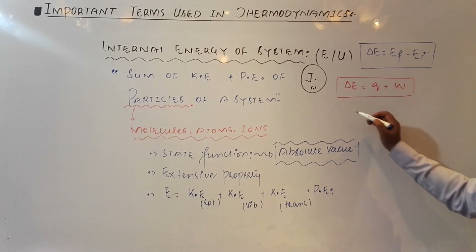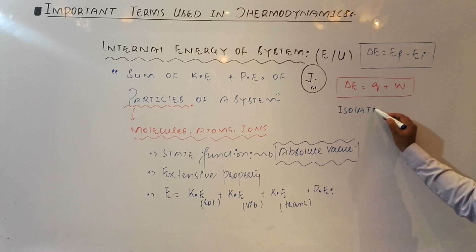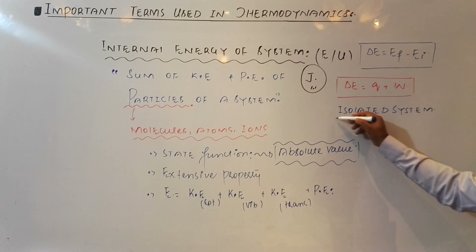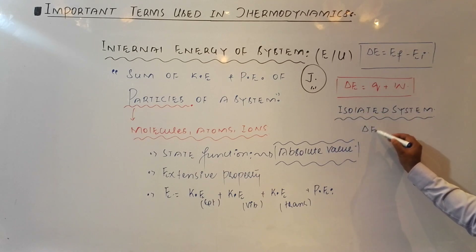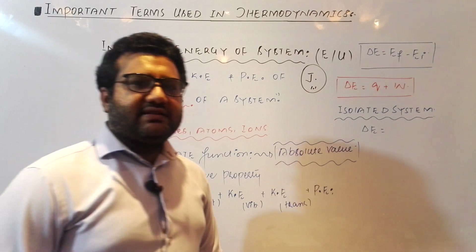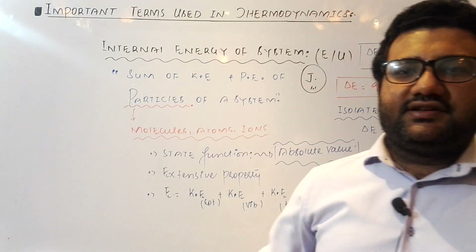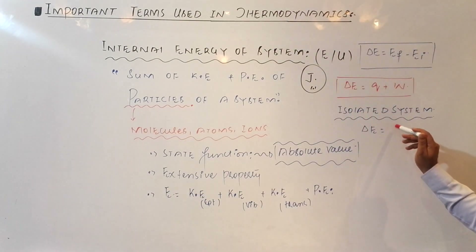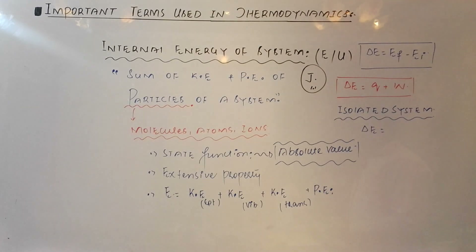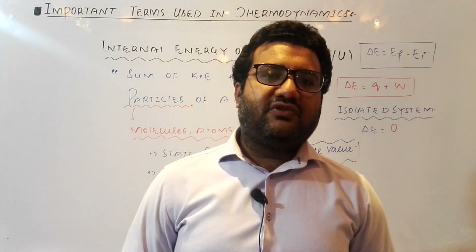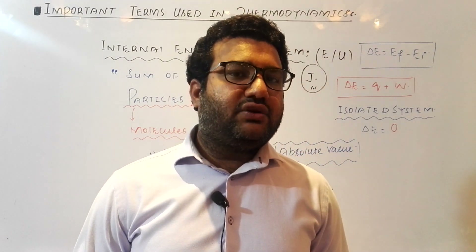Consider this question: if we have an isolated system, what will be the change in internal energy? An isolated system cannot exchange heat or work — or more generally, energy — with its surroundings. When it cannot exchange energy with its surroundings, there will be no change in its energy. Therefore, the change in internal energy for an isolated system is always equal to zero.